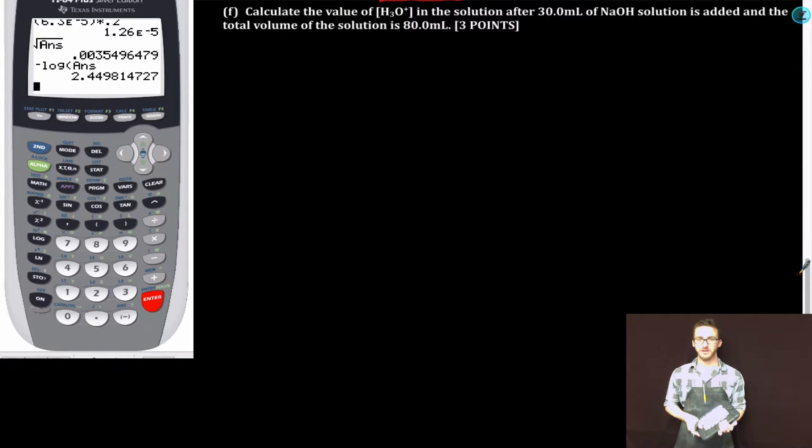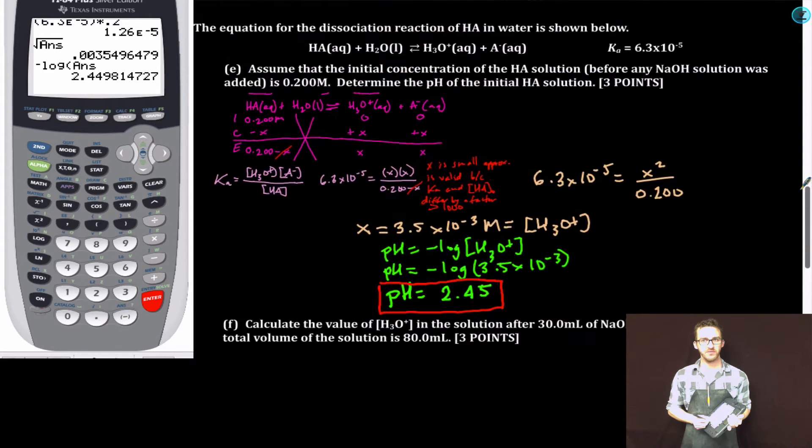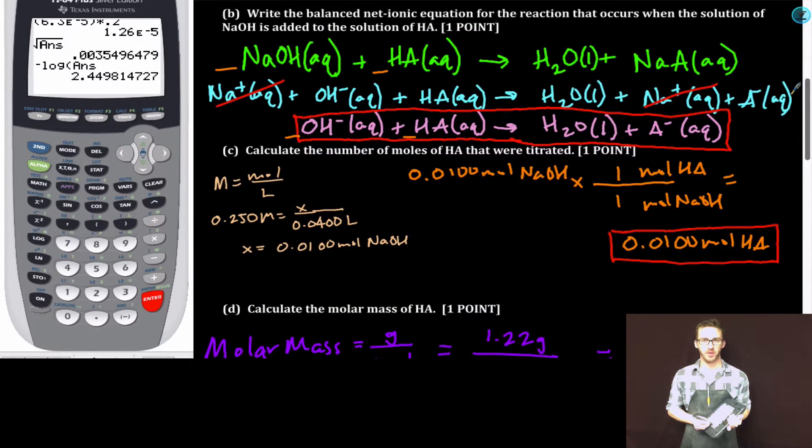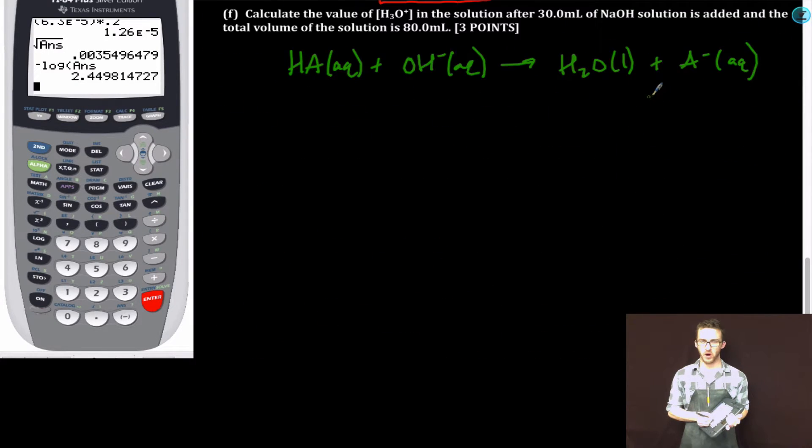Finally, part F: Calculate the value of hydronium ion concentration in the solution after 30.0 milliliters of sodium hydroxide solution is added, and the total volume of the solution is 80.0 milliliters. First thing I'm going to do is I'm going to rewrite the net ionic equation that I wrote from part B. I'm just going to drag that down here and use it in part F.